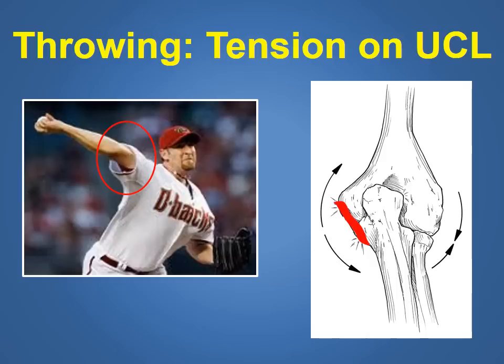Repetitive throwing is the most common cause of ulnar collateral ligament injuries. Therefore these injuries are commonly seen in baseball players especially pitchers, football quarterbacks, and javelin throwers. Occasionally an athlete will have a single painful throw, but more often injuries of the ulnar collateral ligament are due to overuse from repetitive throwing.